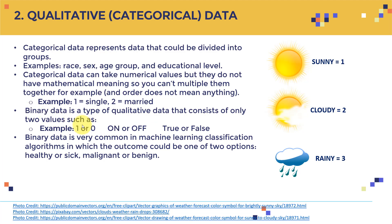Binary data is also a type of categorical data, but it only consists of two values — either one or zero, on or off, true or false. Binary data is very common in machine learning classification algorithms, where the outcome could be one of two options, such as healthy or sick, or malignant versus benign cancer.